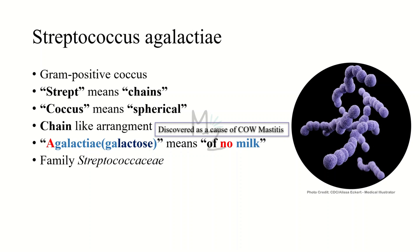This disease was first discovered as a cause of cow mastitis. Strep agalactiae belongs to the family Streptococcaceae. As seen in this picture, strep agalactiae occurs in chains — some are short, some are long — and is spherical in shape.